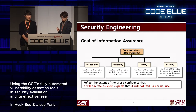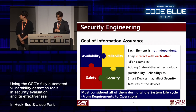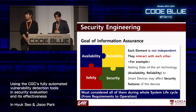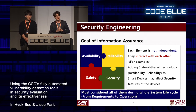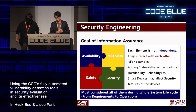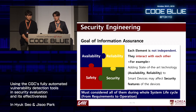These four elements of dependability are not independent of each other — they interact closely and in a complicated way. For example, adding state-of-the-art technology into smart devices may affect security features of those devices. So we must consider all four elements during the whole system life cycle.